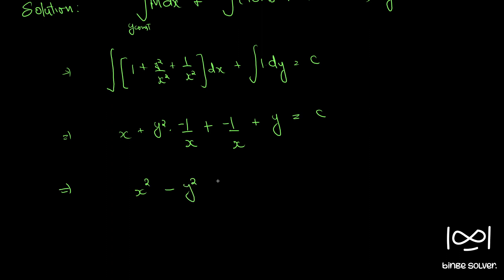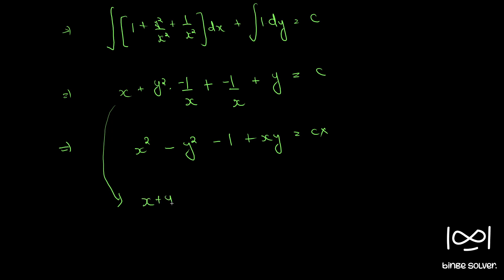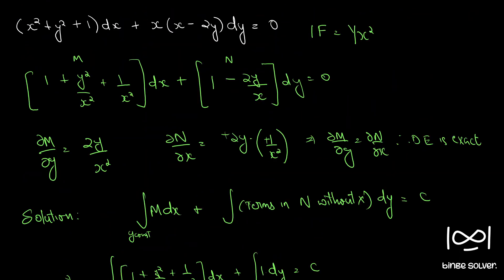Combining and multiplying throughout by x, we get x² − y² − 1 + xy = cx. This can be rearranged as x + y − (y² + 1)/x = c, which is the answer given in the textbook — both forms are correct.